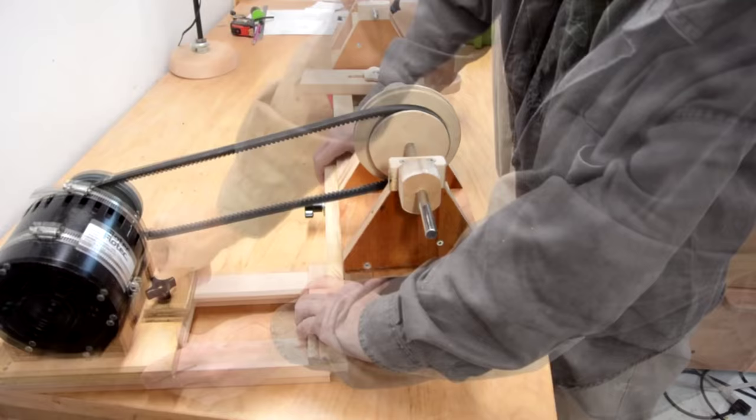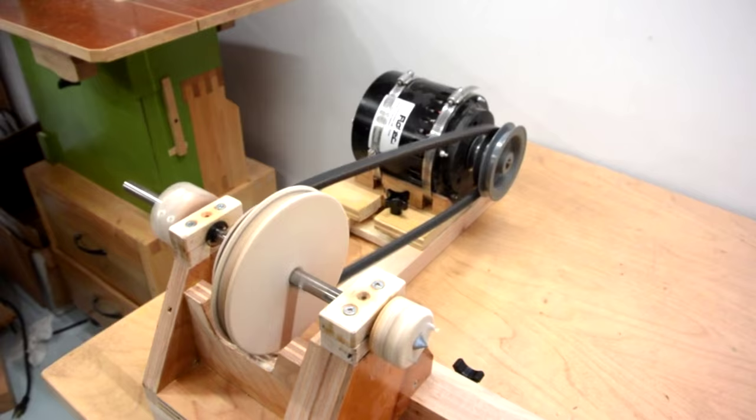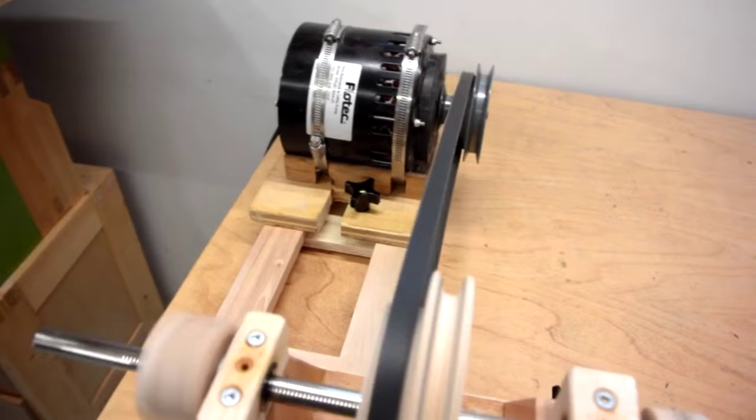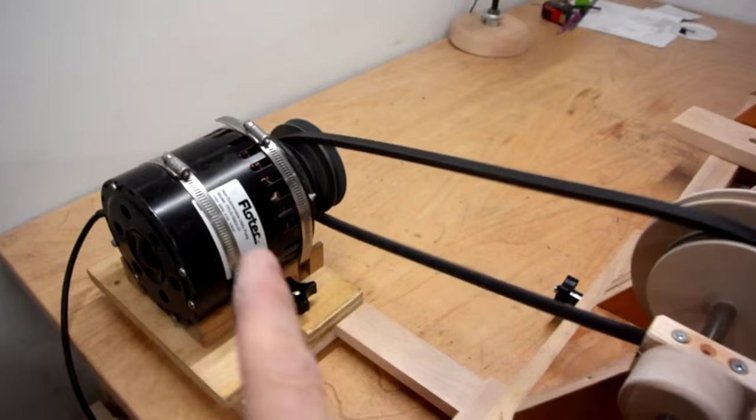Now a lot of you are probably gonna say, hey, you could just use the weight of the motor to tension the belt, but that's actually kind of a dumb idea. Because these V-belts, they always shake a little bit, and if the motor's hanging off the V-belt, that means the motor too is shaking, and the motor's kind of heavy.